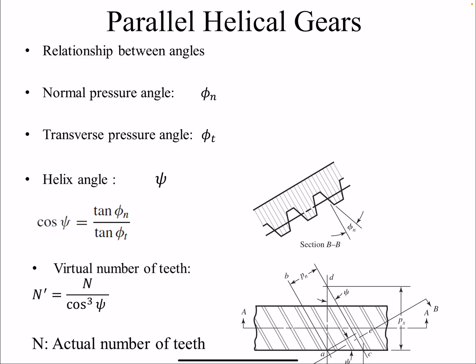In addition to the helix angle, helical gears have two pressure angles: the normal pressure angle and the transverse pressure angle. For a spur gear we had one pressure angle; for helical gears we deal with three angles — normal pressure angle, transverse pressure angle, and the helix angle. The good news is they are not independent. If you know two, you can find the third. The relation is: cosine psi equals tangent phi_n over tangent phi_t.